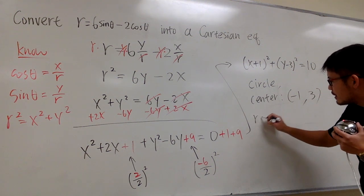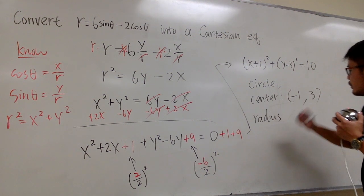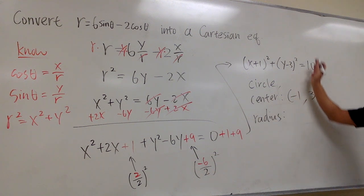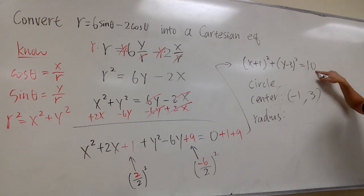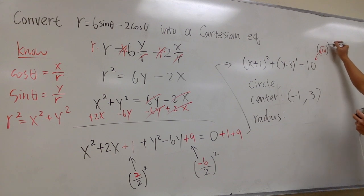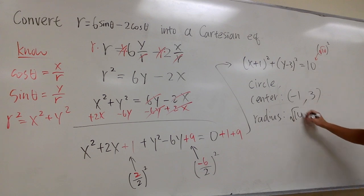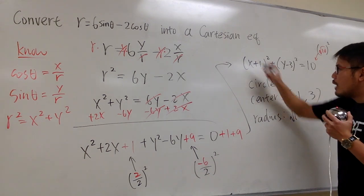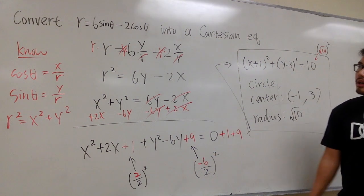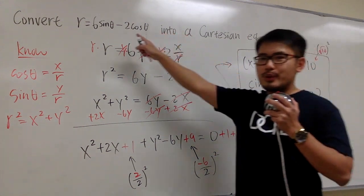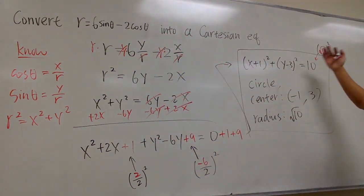And then, we also have to tell you the radius. The radius of this circle, you look at this number, but don't look at 10 as 10. Look at 10 as square root of 10, and then squared. The radius of the circle is square root of 10. So, this is how you will describe this polar equation in the Cartesian equation world. That's it.